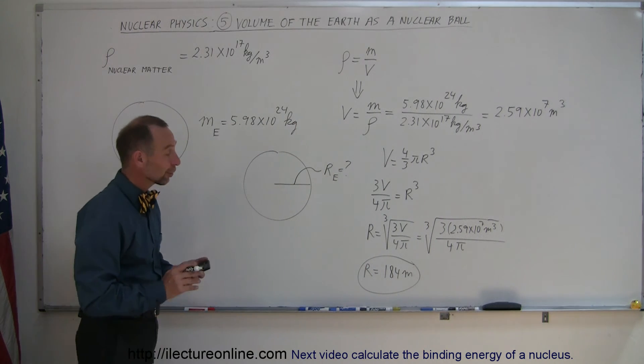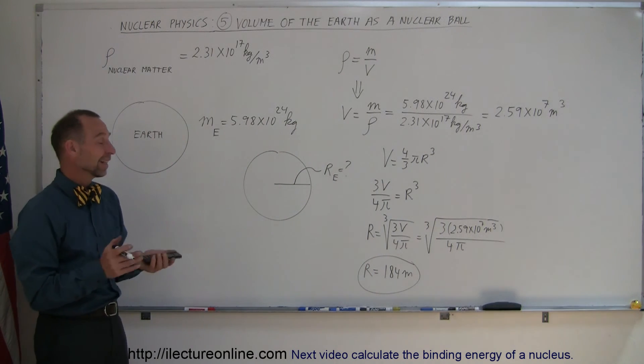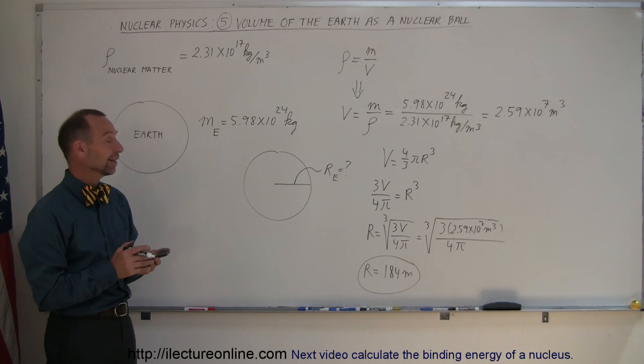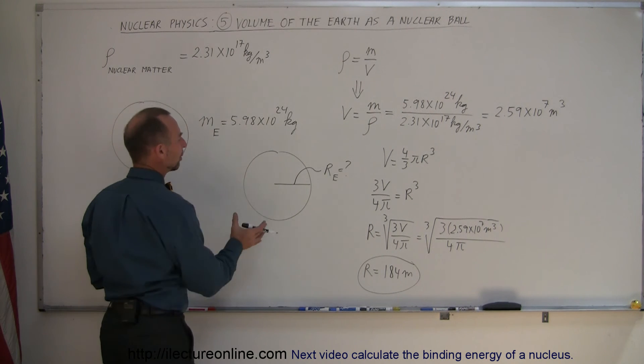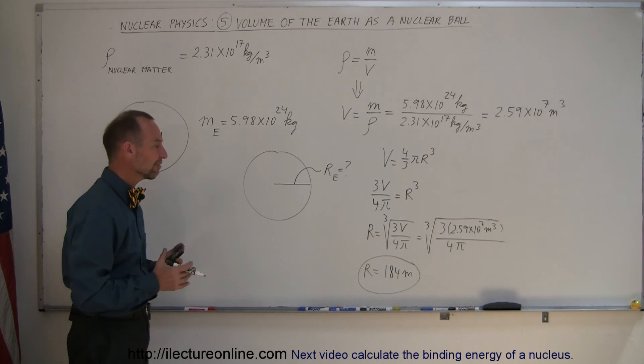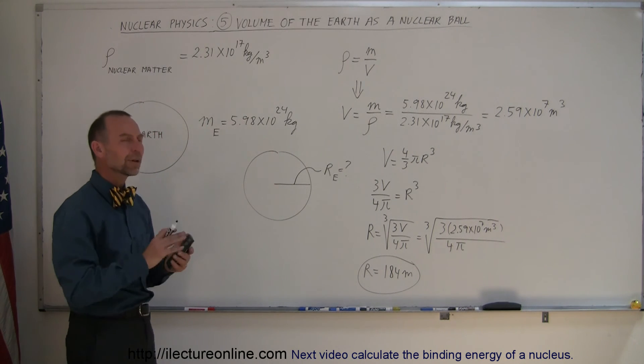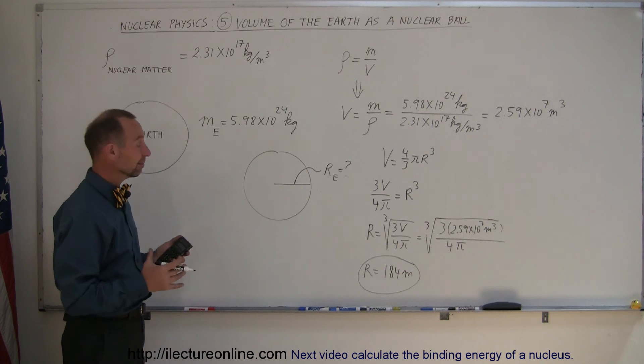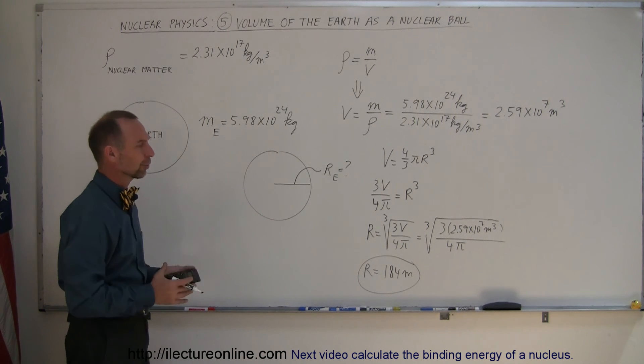Wow. The radius of the Earth would be just slightly less than two football field lengths. Can you imagine that? You could almost put the Earth inside a large, giant stadium and it would actually fit. Well, maybe not quite. But a big stadium, big enough, could actually hold the Earth.